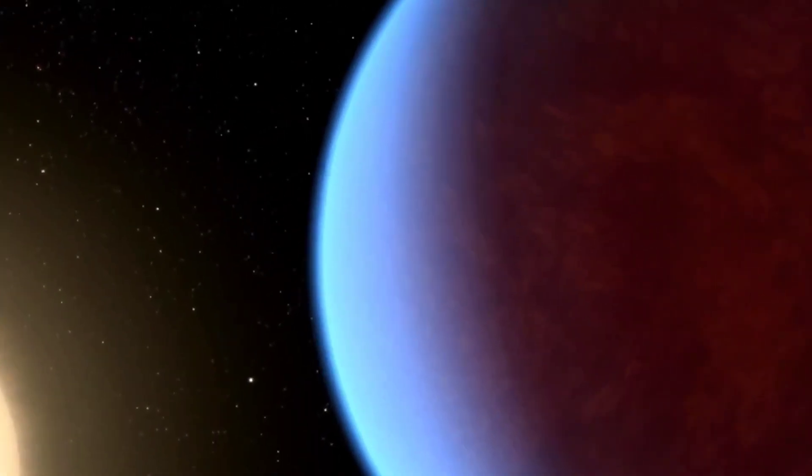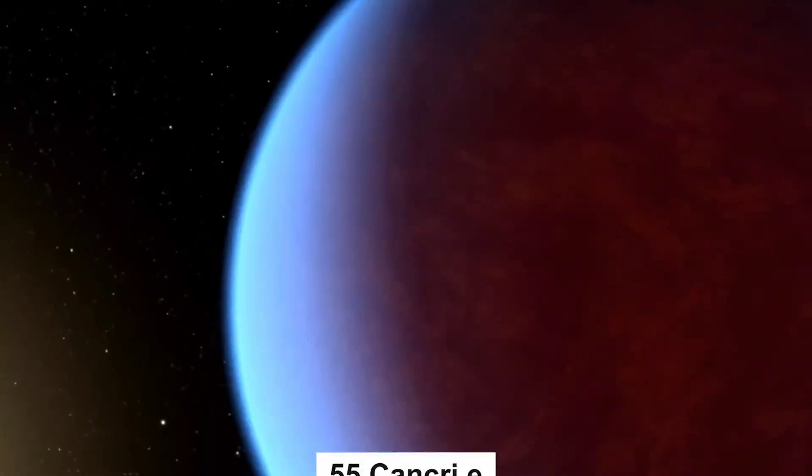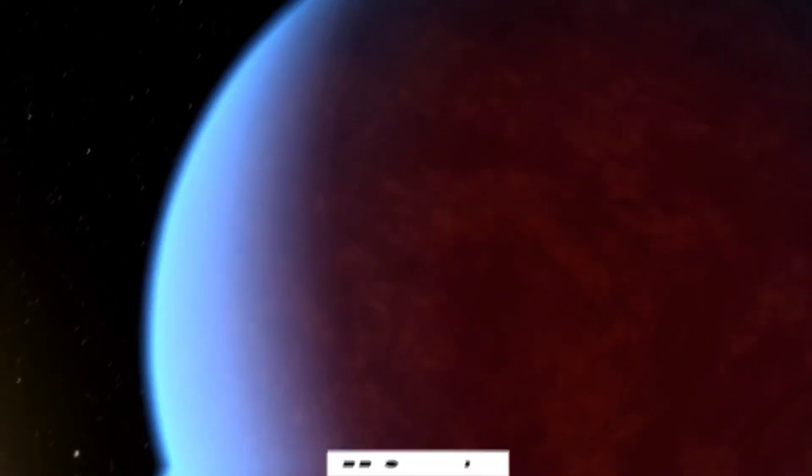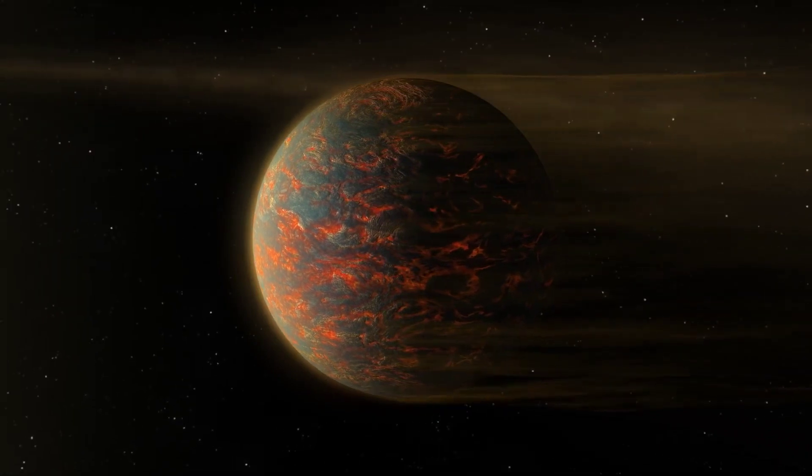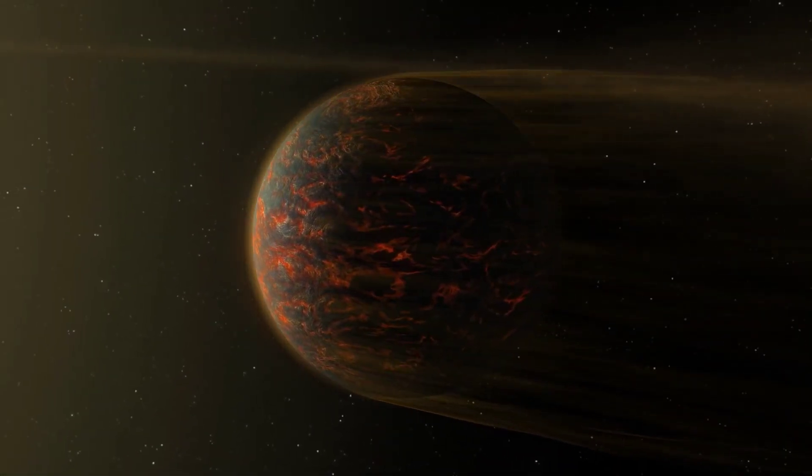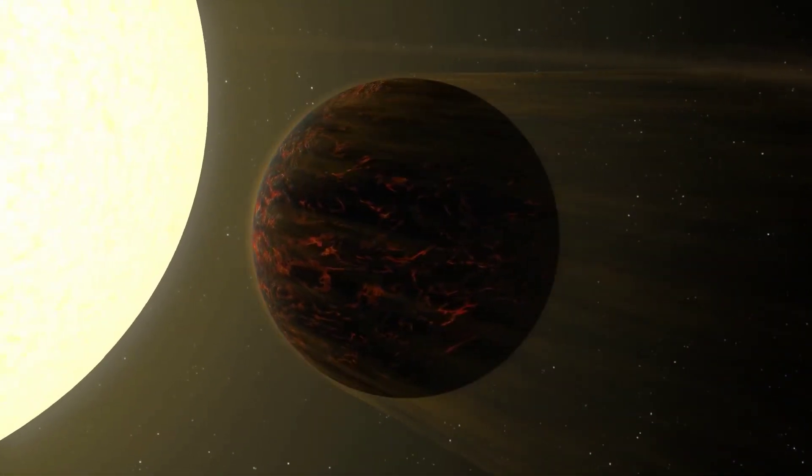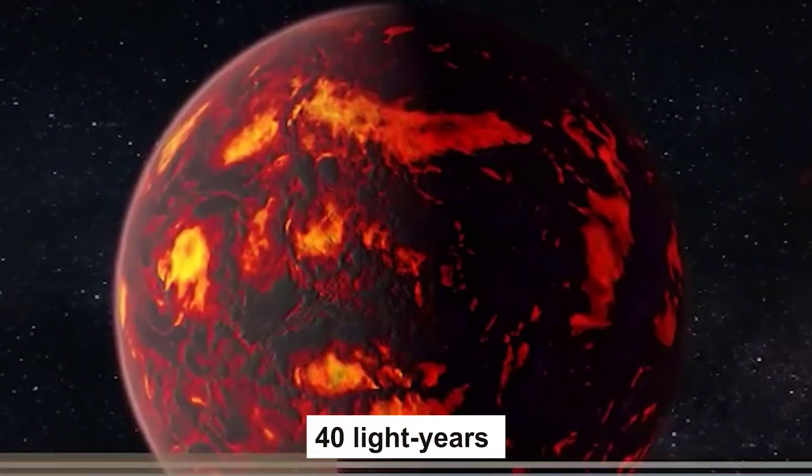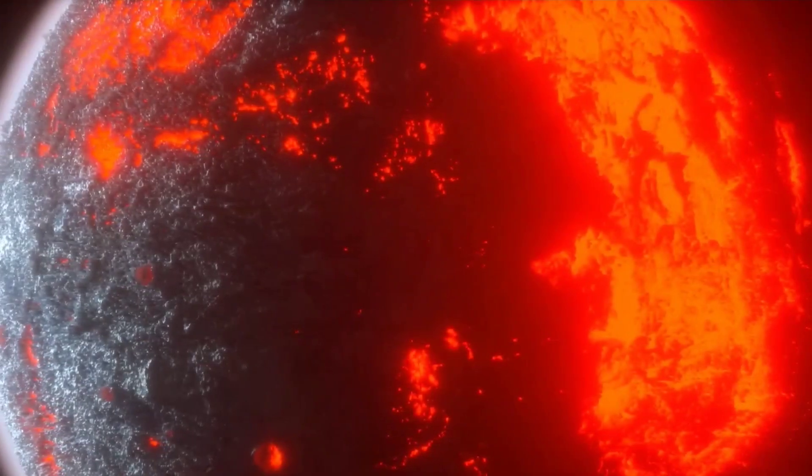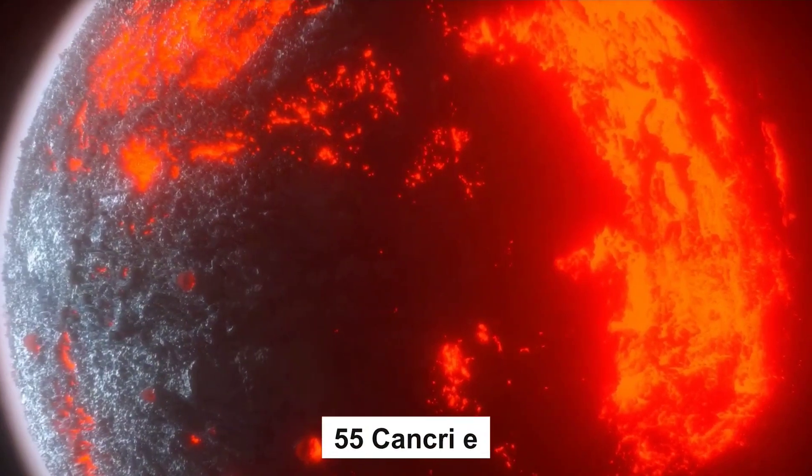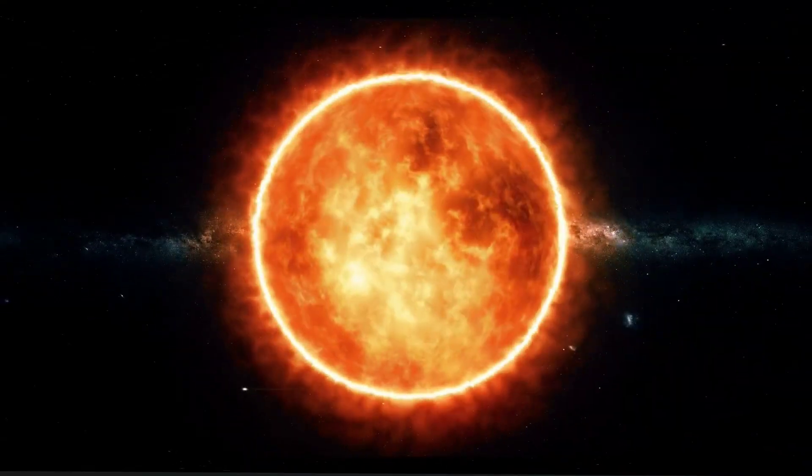The next horrifying exoplanet on my list today is the 55 Cancri e. 55 Cancri e, also known as the Janssen, is an exoplanet situated in the constellation of Cancer, about 40 light-years away from Earth. It orbits a G-type star named 55 Cancri A, which is similar to our Sun.